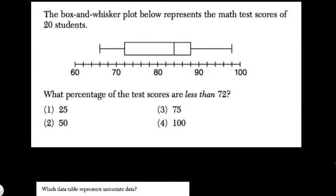We have another box and whisker plot here, and we're told that this represents the math test scores of 20 students. What percentage of the test scores are less than 72?